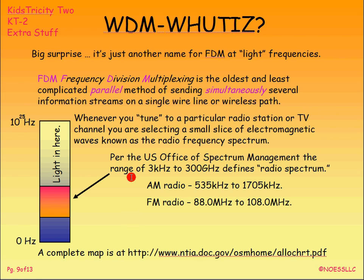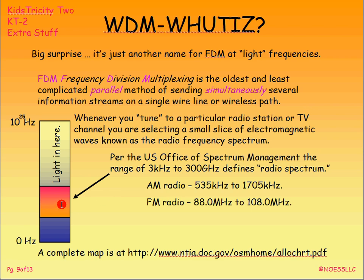I'm showing you AM and FM radio spectrum from a mapping you might want to go out and get — it's a really fine map of the entire electromagnetic spectrum, starting from zero hertz up to 10 to the 25th hertz. We're going to be dealing with this in our fiber optic systems, but on our wire and radio systems we've been doing frequency division multiplexing for a long time. Go get that map.